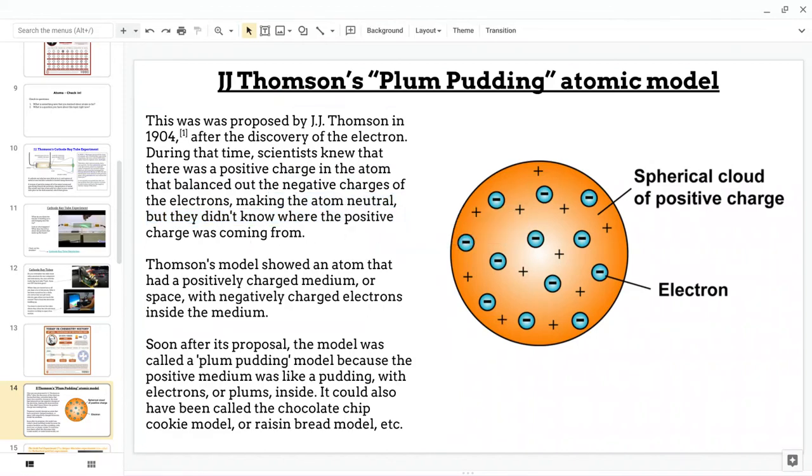And so this is what they thought. They thought that an atom was basically positive with a bunch of negative electrons stuck in, like chocolate chips. We would have called it the chocolate chip model. He called it the plum pudding model. And that's it.